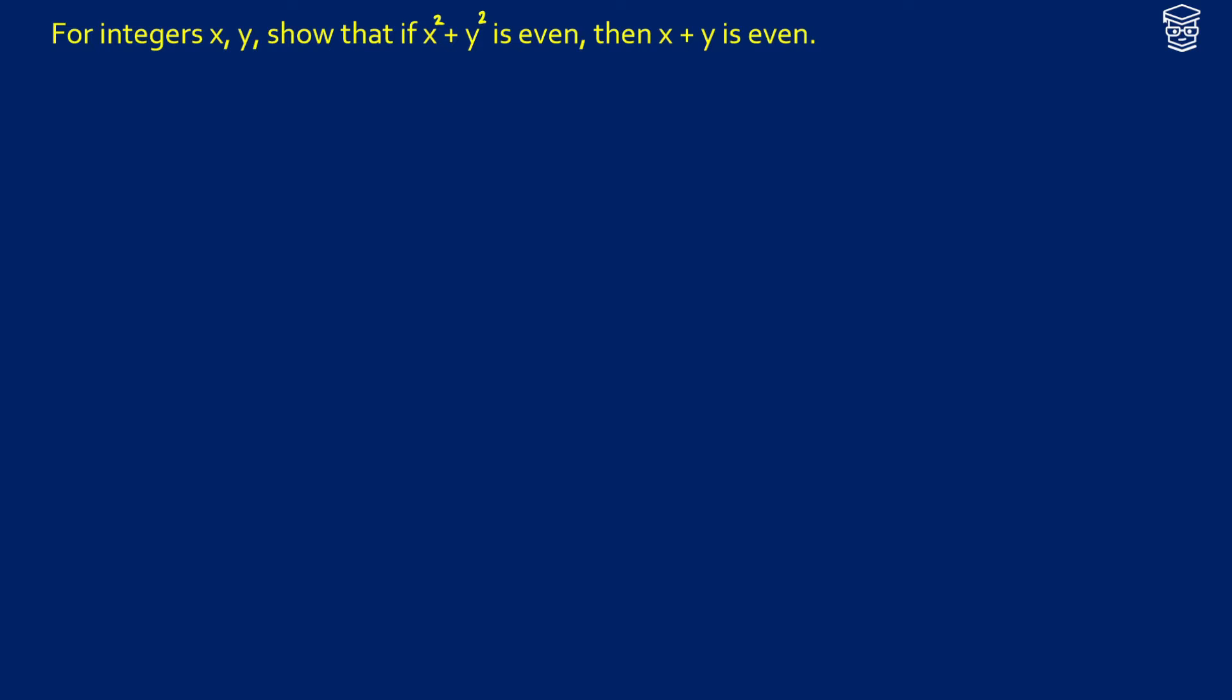This one might be a little bit difficult, so we're going to have to be creative with our strategy. Because all we know that we can start with is that x squared plus y squared is even. To progress from here, we're going to do something clever to get to x plus y, and what that is, is we're going to end up trying to get some sort of factoring going on.